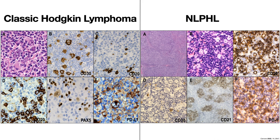Hodgkin Reed-Sternberg cells are also highly associated with PD-L1 expression, as shown in figure F. On the right side, the majority of nodular lymphocyte predominant Hodgkin lymphoma cases are characterized by a nodular growth pattern. These nodules, seen in figure B, consist of abundant small reactive B lymphocytes, epithelioid histiocytes, and intermingled neoplastic LP cells, which are nicely highlighted by CD20. The LP cells express CD20, demonstrating an intact B cell program, and are CD30 negative, although rarely can be positive.